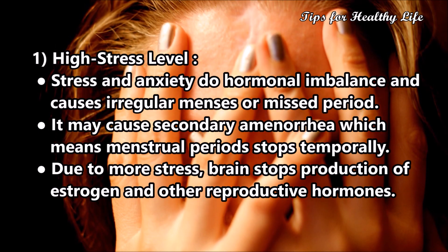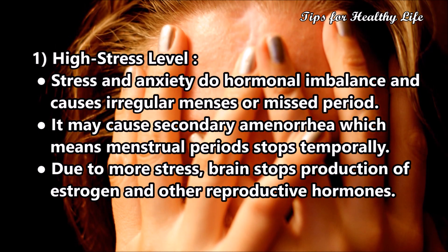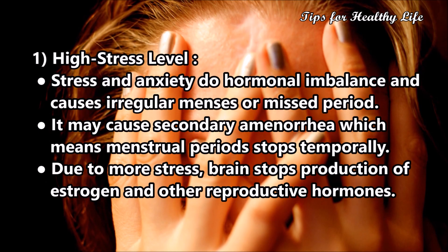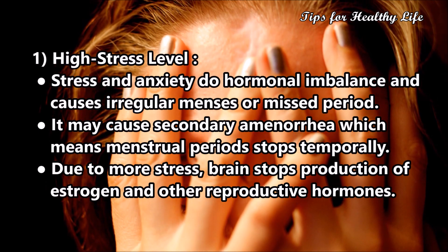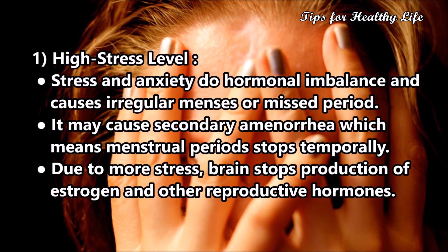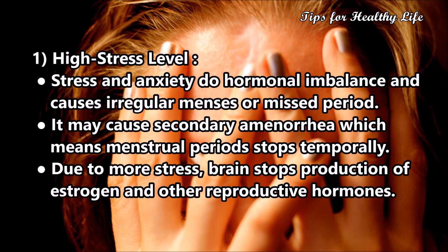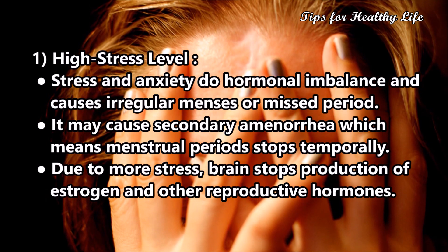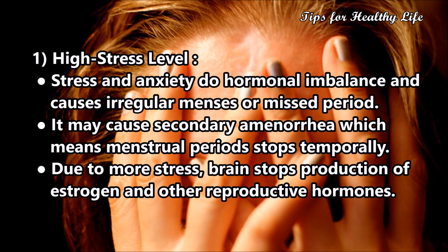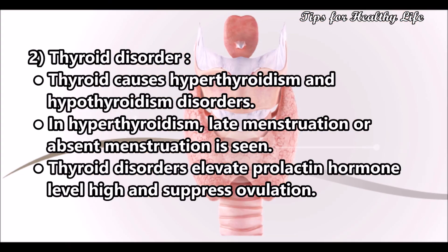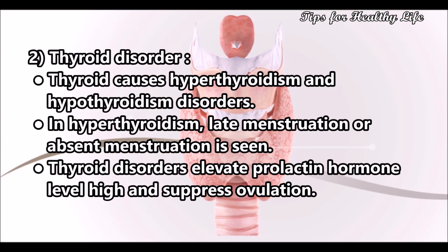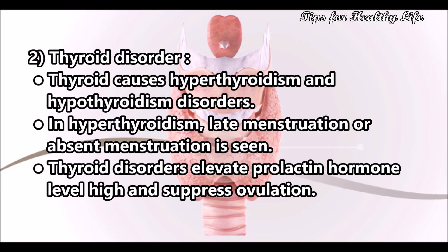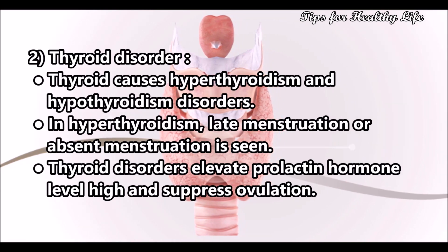High stress may cause secondary amenorrhea, which means the menstrual period stops temporarily. Due to more stress, the brain stops production of estrogen and other reproductive hormones. Cause 2: Thyroid disorder — thyroid conditions cause hyperthyroidism and hypothyroidism.